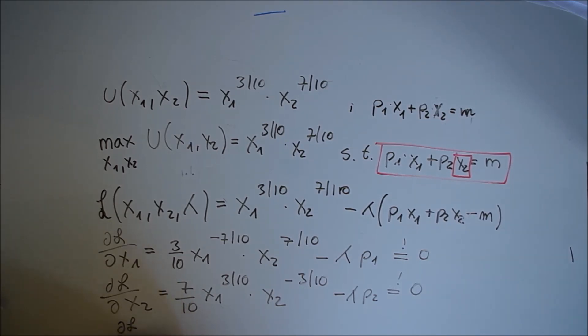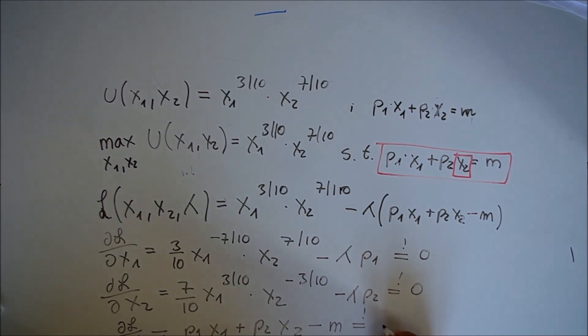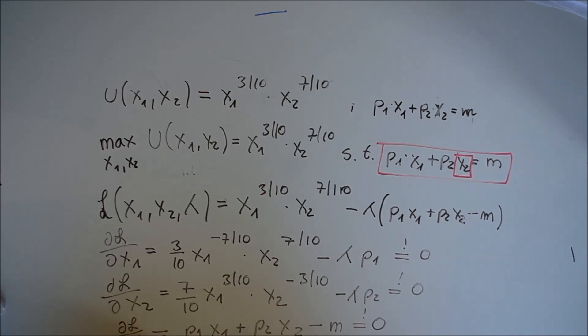The partial derivative with respect to lambda is ∂L/∂λ = -(p1*x1 + p2*x2 - M) = 0, which is the budget constraint.